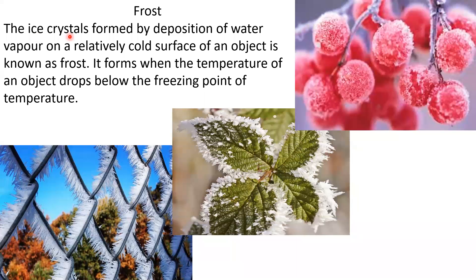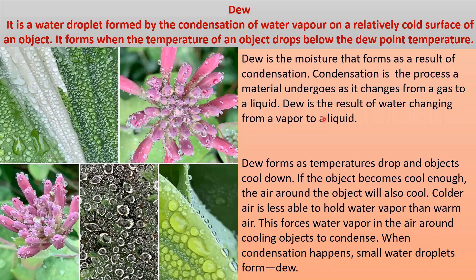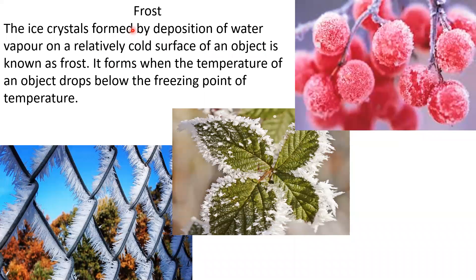Frost: the ice crystals formed by the deposition of water vapor on a relatively cold surface of an object are known as frost. Instead of water drops, a further decrease in temperature makes the water droplets freeze. Frost forms when the temperature of an object drops below the freezing point, whereas dew is formed when the temperature drops below the dew point temperature.